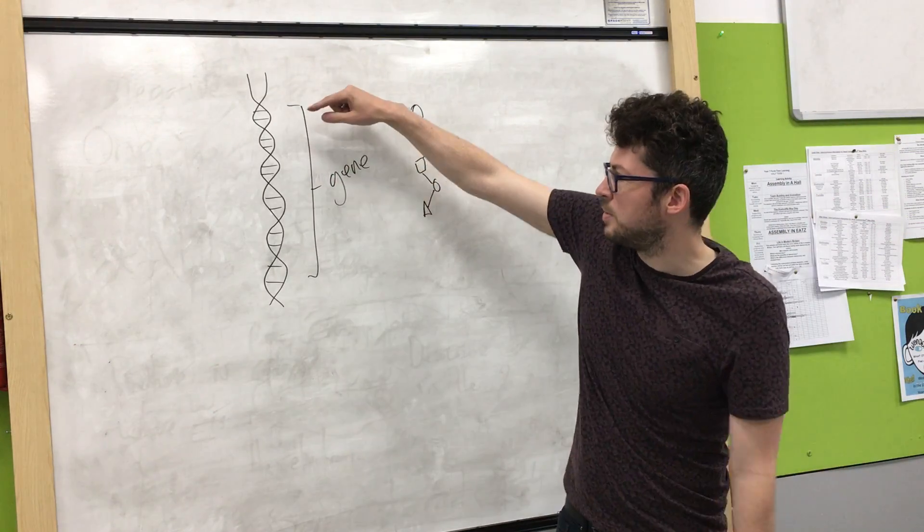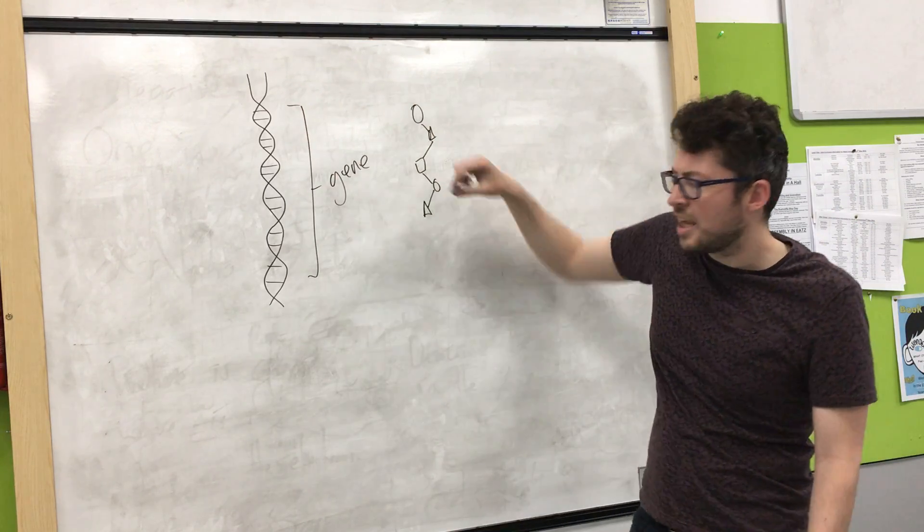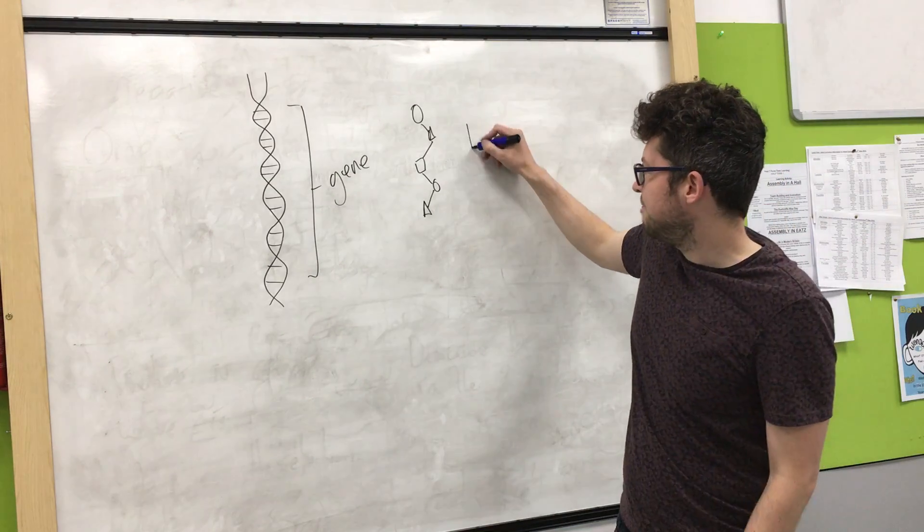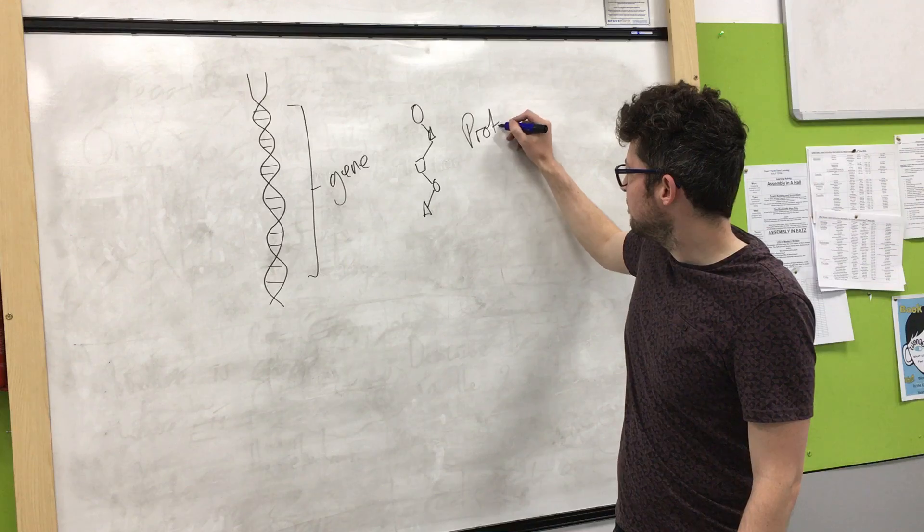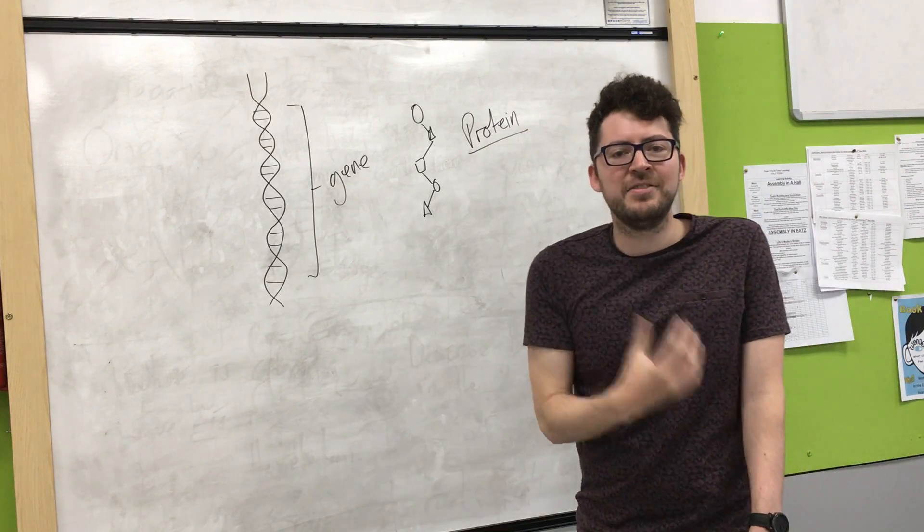So it's essentially a script. And the cell reads through it and puts together a specific sequence of amino acids, which makes a protein. And it is this protein that gives us our features.